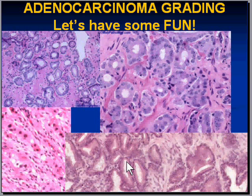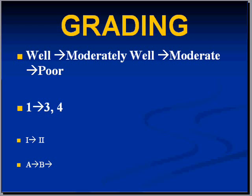For a normal prostate, we might say this is a well-differentiated adenocarcinoma, this is moderately well, and this is poorly differentiated. In a pathology report, we use descriptive language going from the best degree of differentiation, called well-differentiated, to the worst prognosis, called poorly differentiated. Sometimes grading, especially in older days, was given numbers, Roman numerals, or letters. Except for prostate, this numeric system isn't very important anymore.